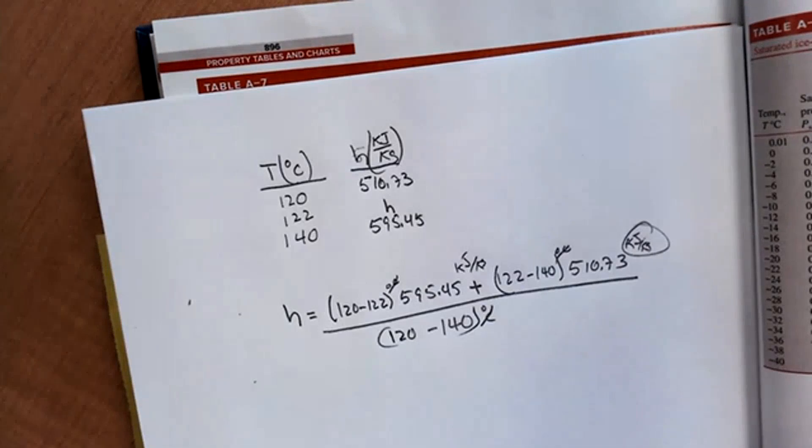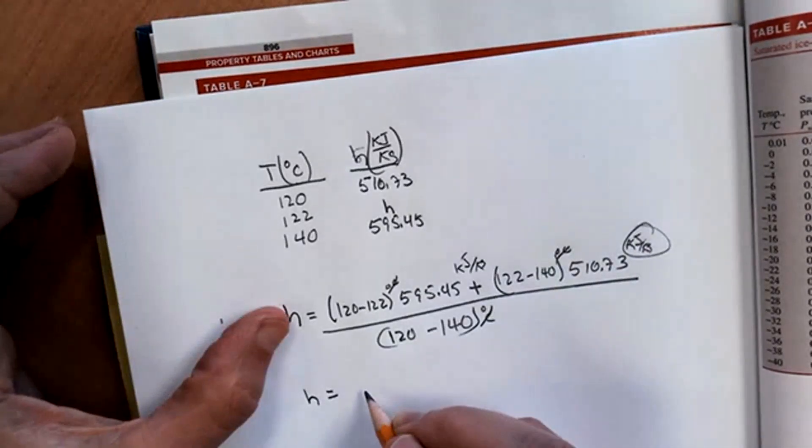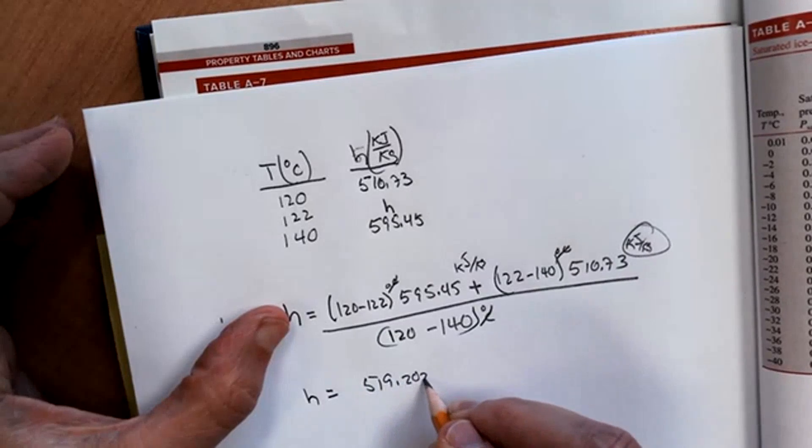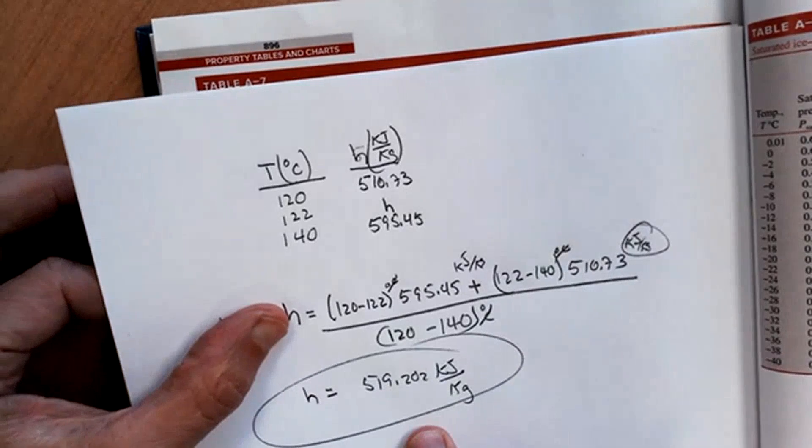If you do this math, you should come up with an H value that's equal to 519.202 kilojoules per kilogram. All right, so that's how you do that one.